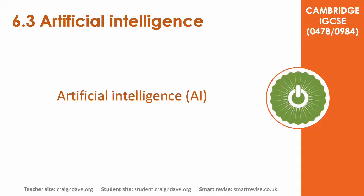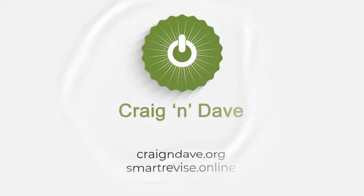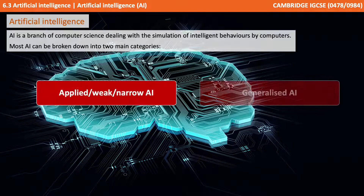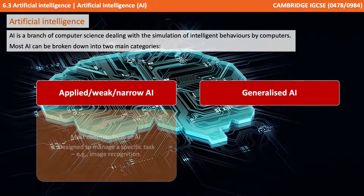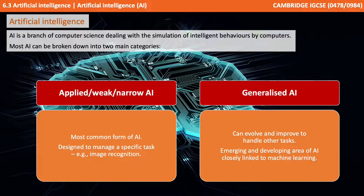In this video we take a look at artificial intelligence. AI is a branch of computer science dealing with the simulation of intelligent behaviours by computers.